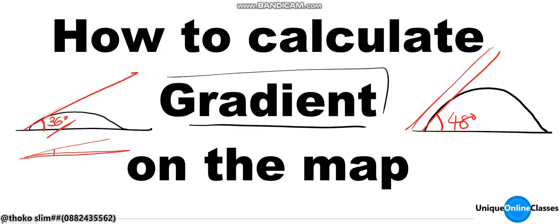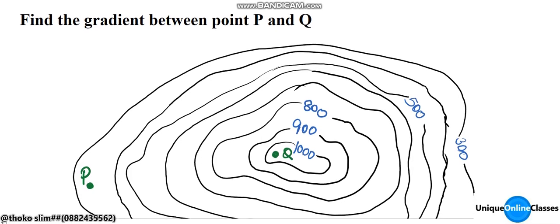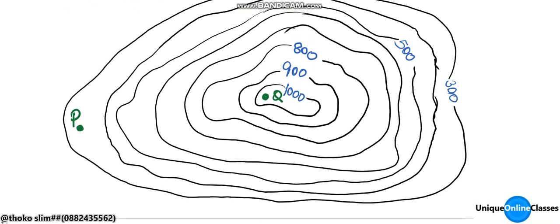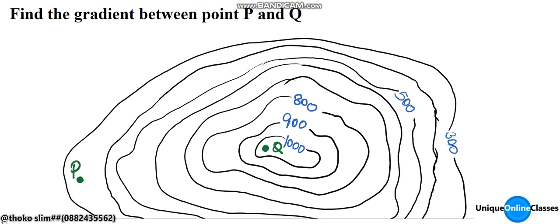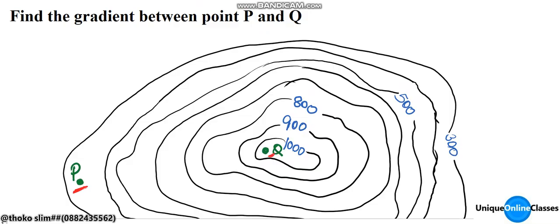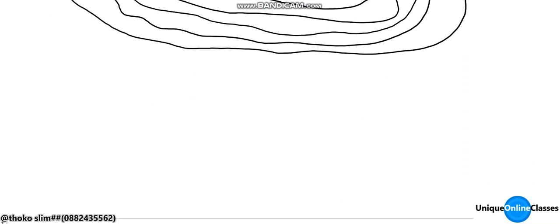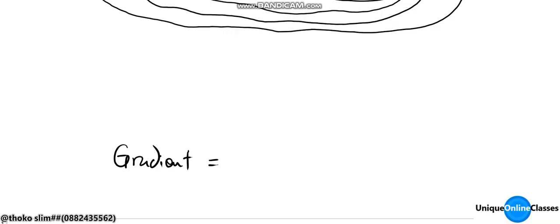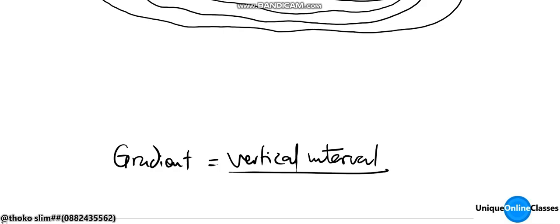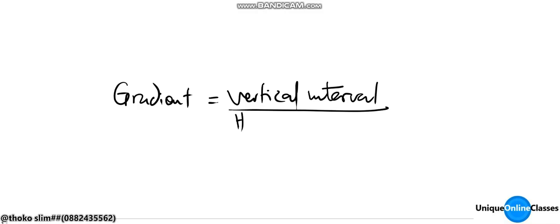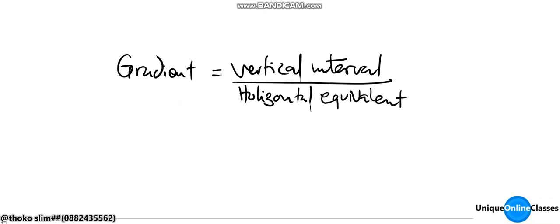Below there is an example asking us to find the gradient between point P and point Q. So this is our diagram — this is P and this is Q. The formula to find a gradient is: gradient equals the vertical interval divided by the horizontal equivalent.